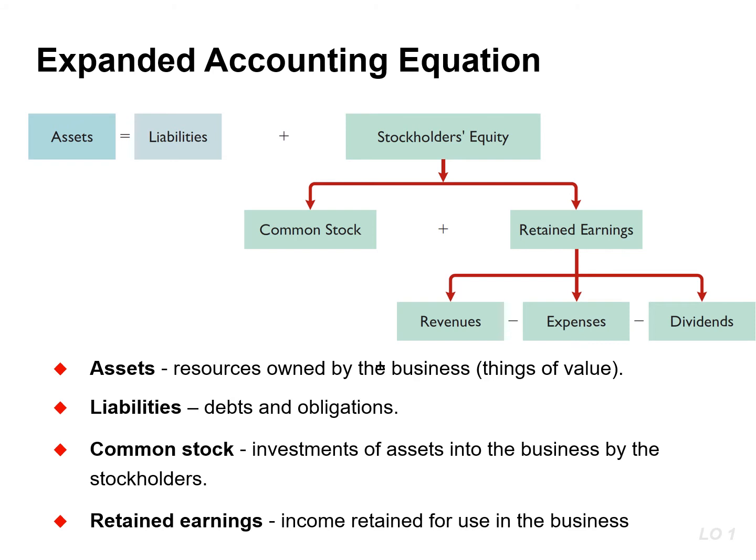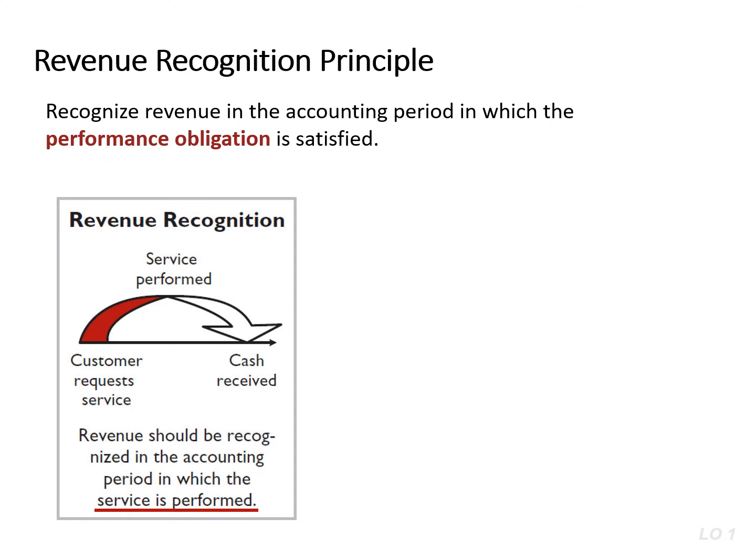Stockholders' equity is comprised of two parts: common stock and retained earnings. Common stock is affected when the company issues new shares of stock in exchange for cash. Retained earnings is affected when the company recognizes revenue, incurs expenses, or pays dividends. Before we analyze business transactions, we need to talk about two concepts. When a company agrees to perform a service or sell a product to a customer, it has a performance obligation. The revenue recognition principle requires that companies recognize revenue in the accounting period in which the performance obligation is satisfied, typically when goods are delivered or services are performed.